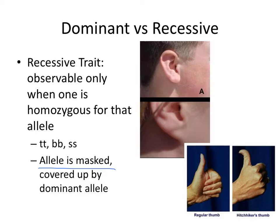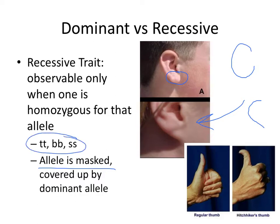Here's an example of a recessive allele: a trait for humans that we call attached earlobes. Instead of having a free earlobe that kind of dangles from the side of the face, an attached earlobe attaches straight across to the skin of the face. Recessive traits are only going to be shown when two recessives are inherited — a recessive from mom and a recessive from dad. Because if you do inherit a dominant form of the gene, the dominant form will definitely be expressed.